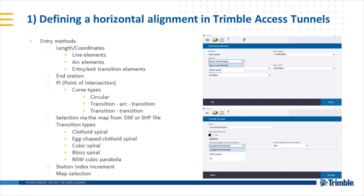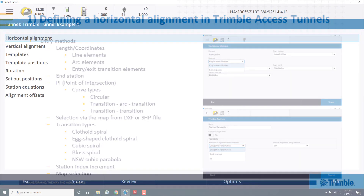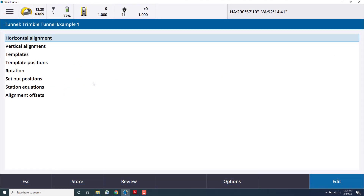You can also select via the map in Trimble Axis from a DXF or shapefile for entering alignment elements. There's also a variety of transition types for spiral curves, station index increment, and through the map selection.